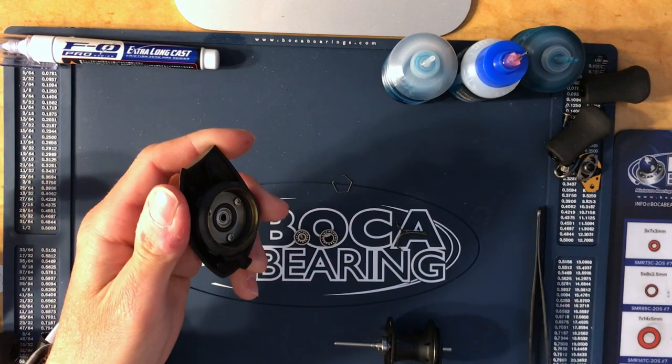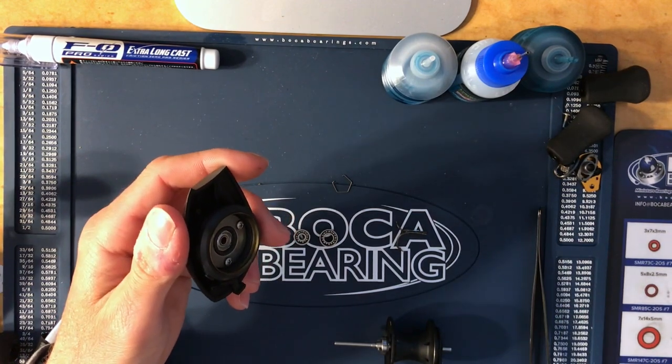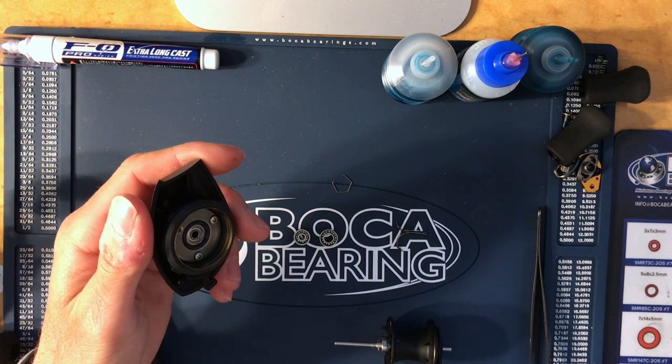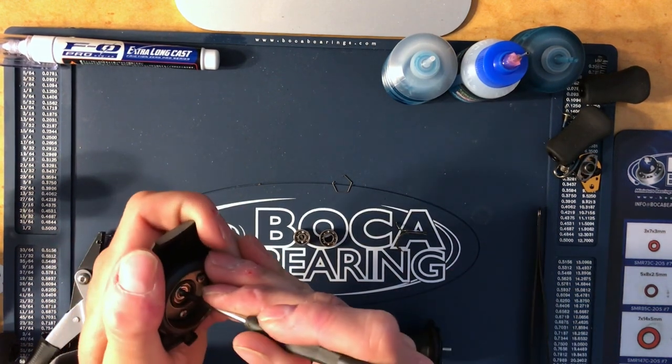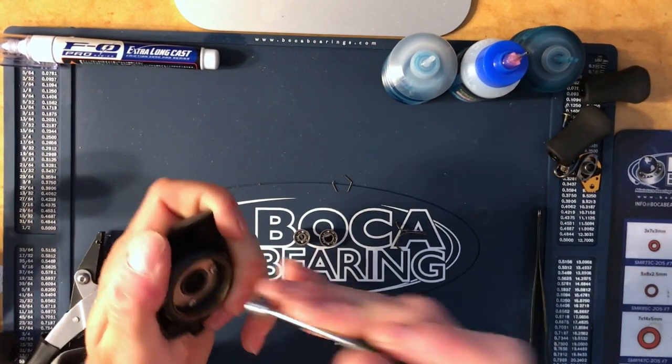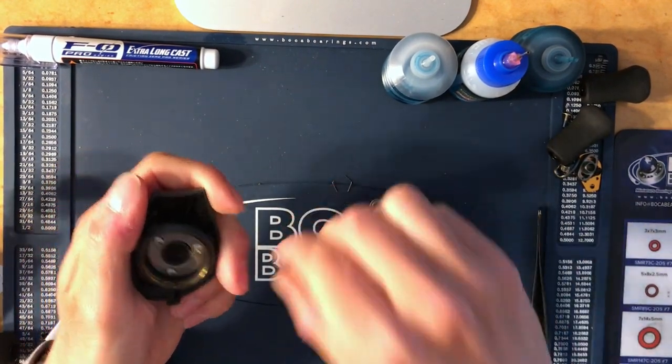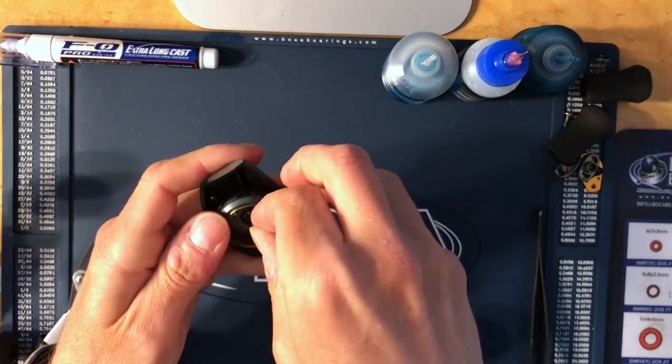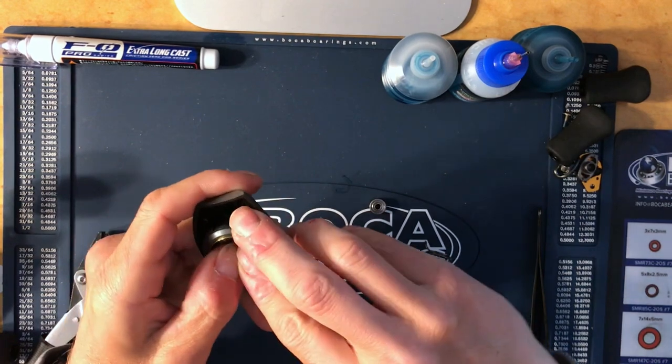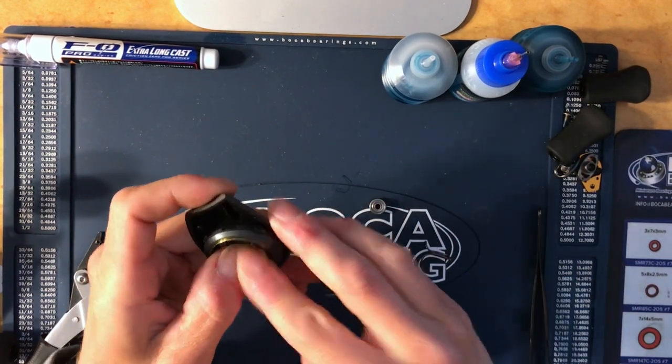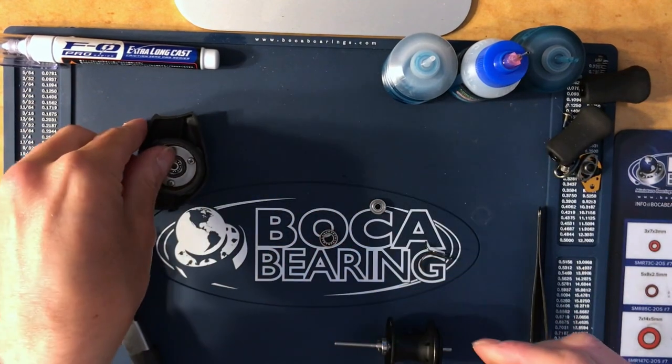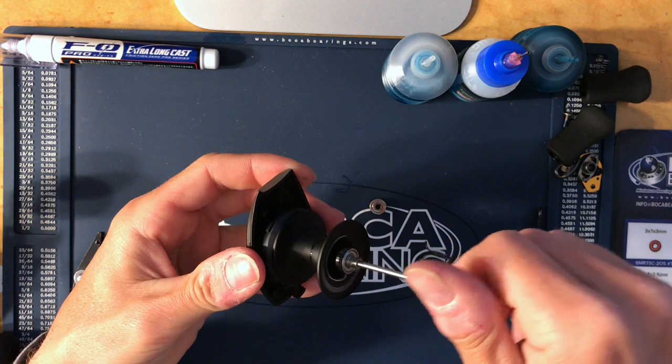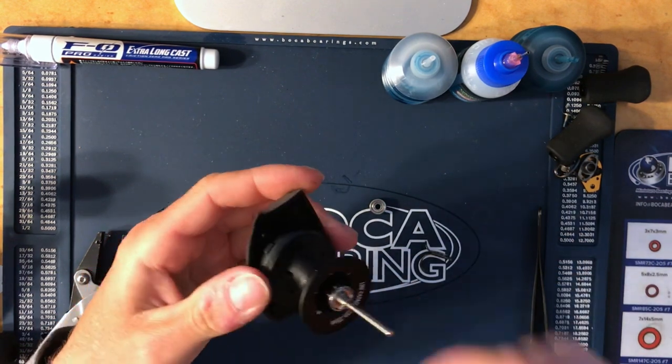Hopefully this bearing comes out easily. A lot of times they get stuck because they are super dry. That pops off, slide the new one in. Put the retaining clip back on, that's good to go. Put spool in here just to kind of get that oil mixed around in there.